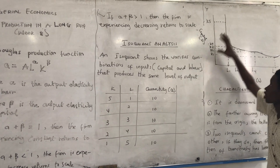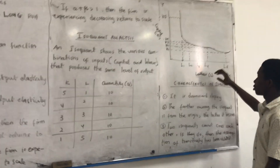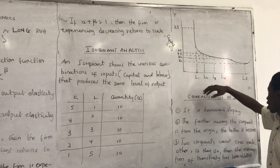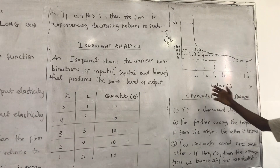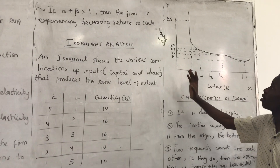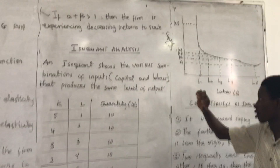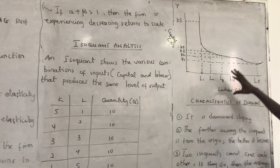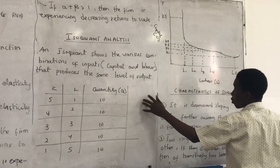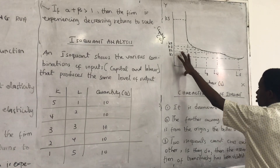We use this to illustrate a diagram. The x-axis takes labor, and the y-axis — the vertical axis — takes capital. This is how we illustrate the isoquant.